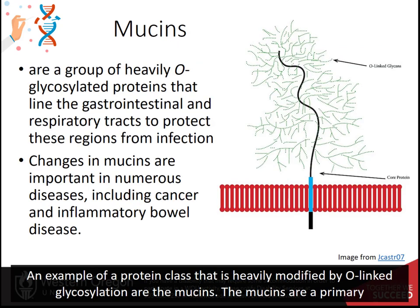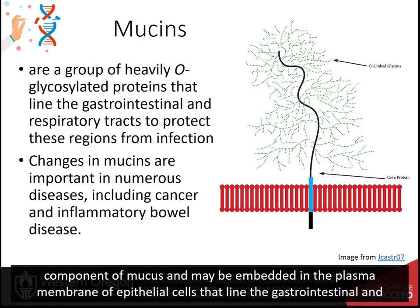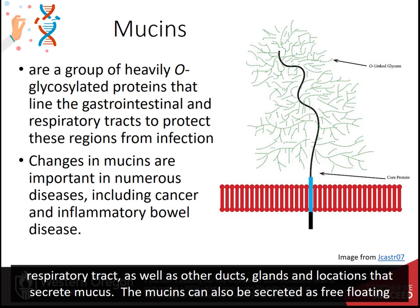An example of a protein class that is heavily modified by O-linked glycosylation are the mucins. The mucins are a primary component of mucus and may be embedded in the plasma membrane of epithelial cells that line the gastrointestinal and respiratory tract, as well as other ducts, glands, and locations that secrete mucus.